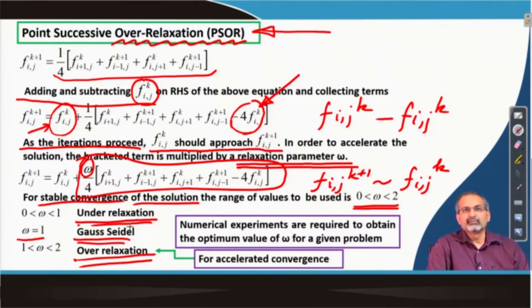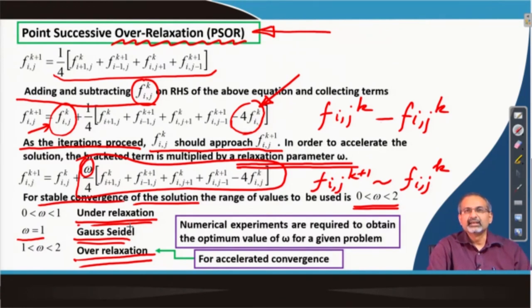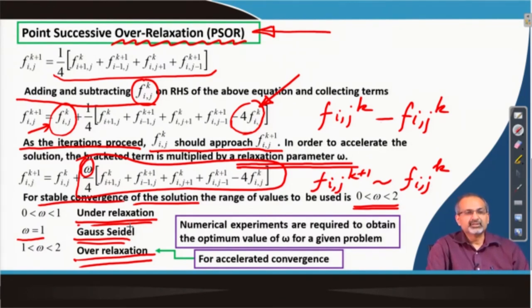Most often, for specific equations and specific problem scenarios, you would actually have to do some numerical experiments before you get to know what the optimum value of omega is. There is usually no a priori prescription for an optimum omega.